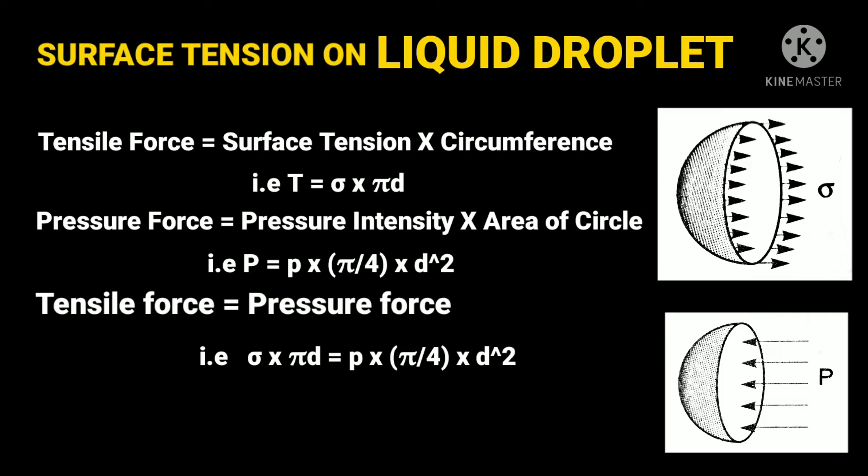After simplifications, we will get intensity of pressure p is equal to 4 sigma by d. Now, from this equation, it clearly shows that if the diameter of liquid droplet decreases, then the pressure intensity increases.